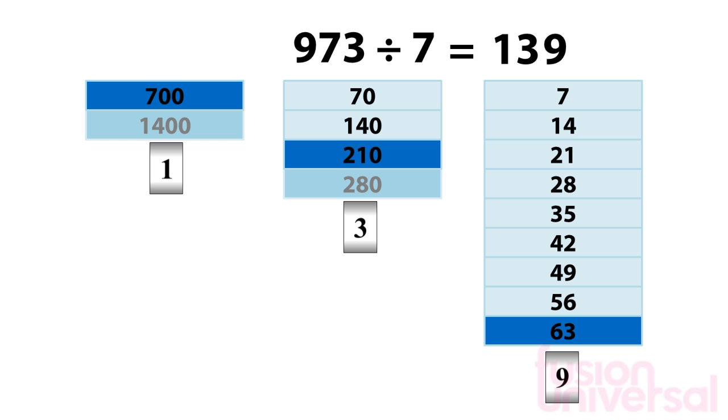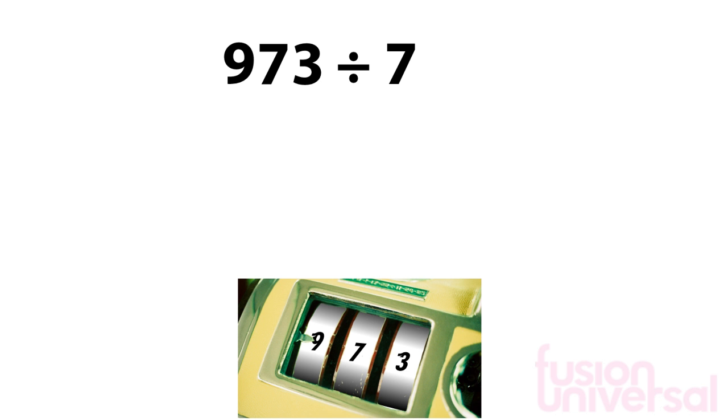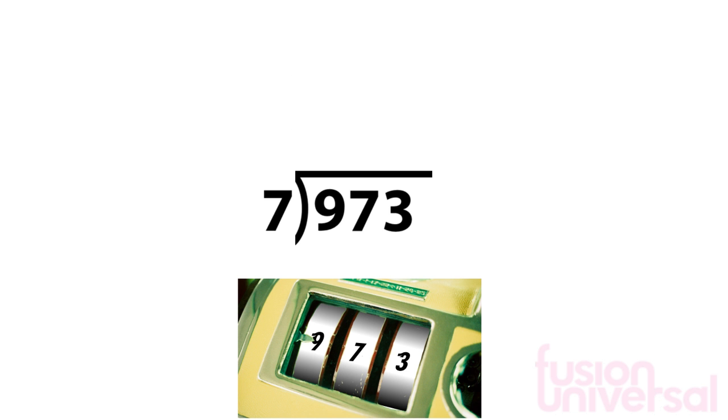The answer appears as 139. As before, we can write it like this. This time, 7 goes into 9 once, with a remainder of 2. This remainder is placed in front of the 7 to make 27.